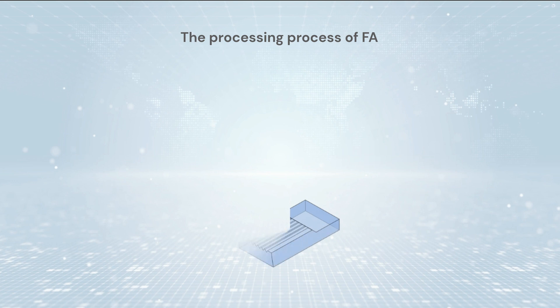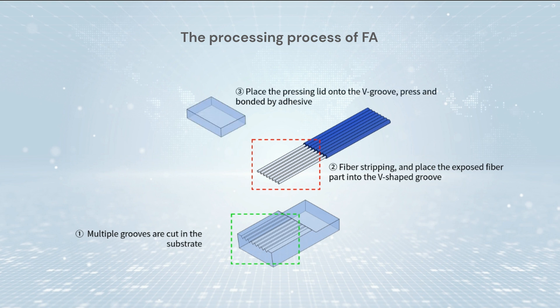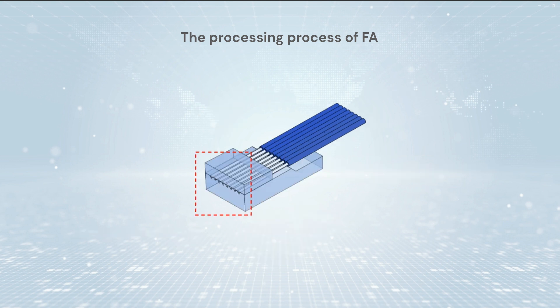The processing process of fiber array is, first, multiple grooves are cut in the substrate. Then, fiber stripping and place the exposed fiber part into the V-shaped groove. Place the pressing lid onto the V-groove, press and bond by adhesive. Finally, the surface is ground and polished to the required precision.